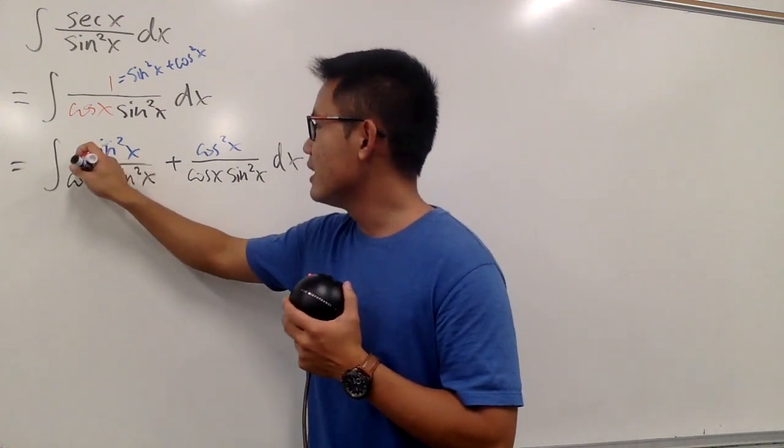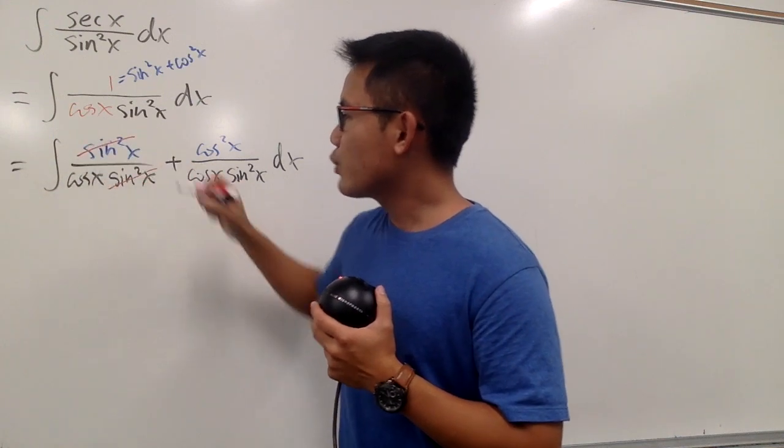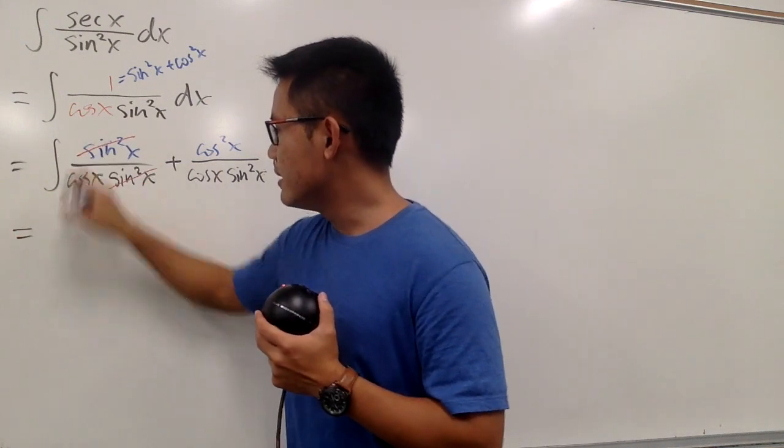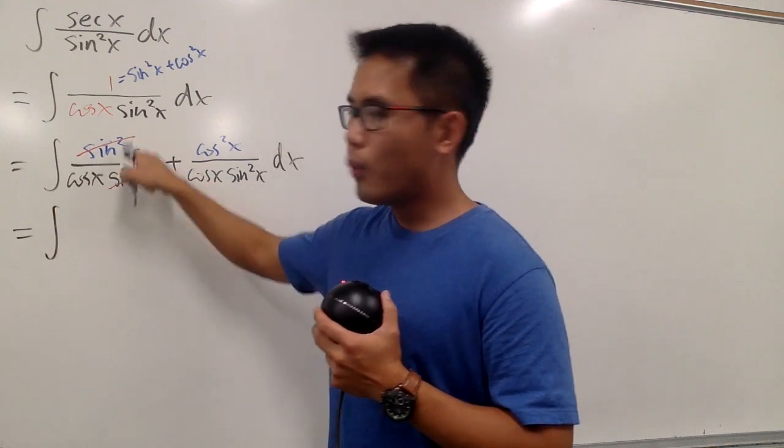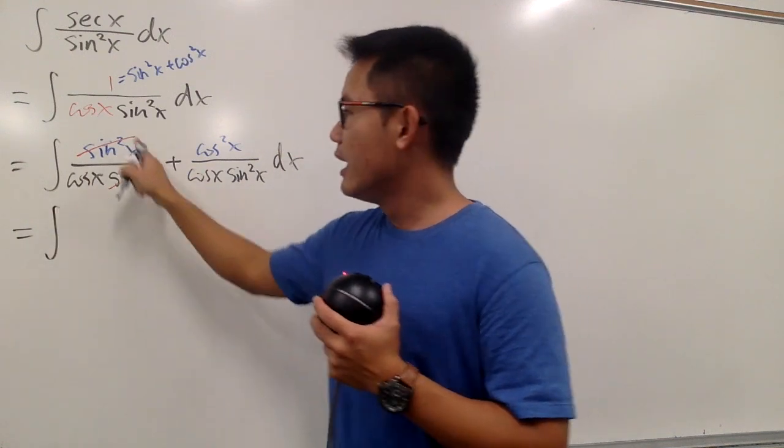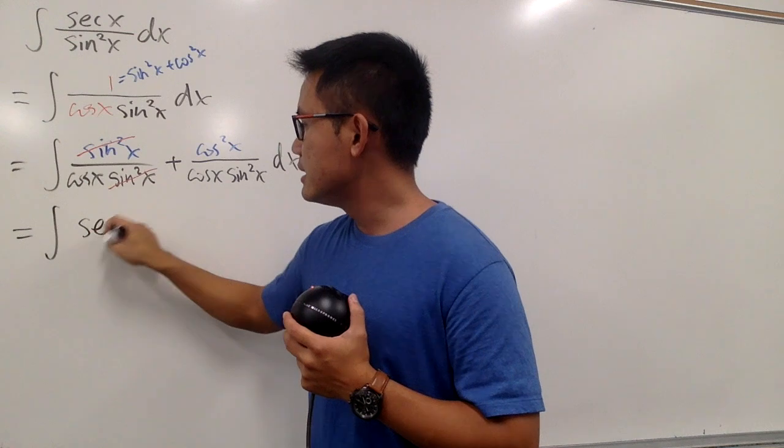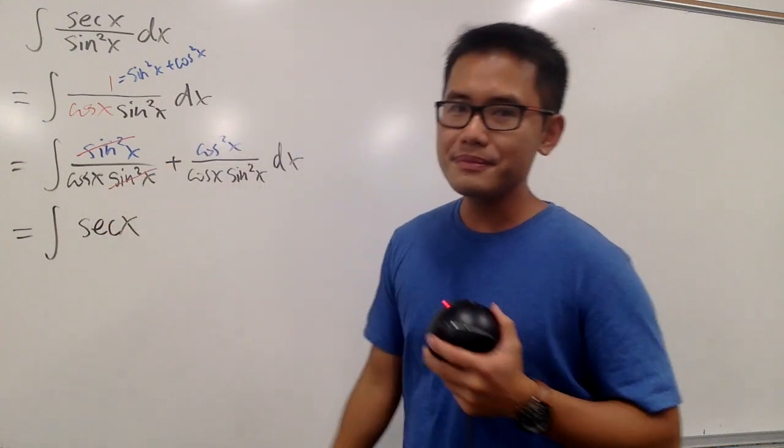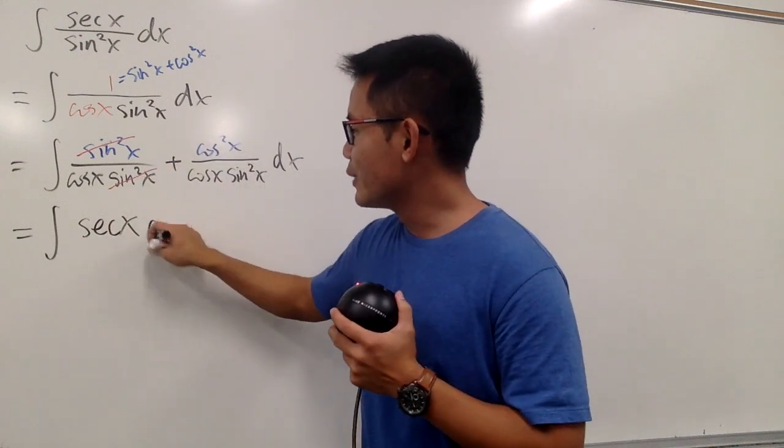Because right away, you see, the sine squared x, sine squared x, they cancel each other out. And in fact, this is going to be the integral 1 over cosine x. Let me put this down as secant x, yeah? And I'll close the integral right here.